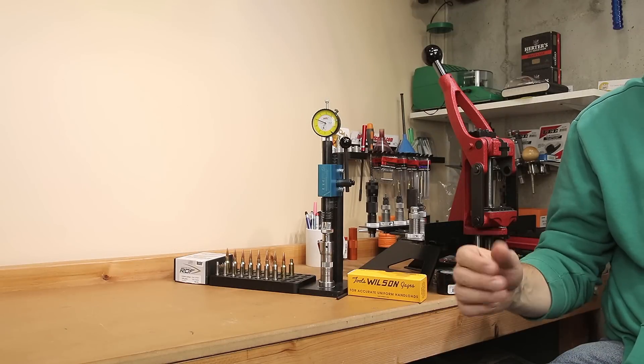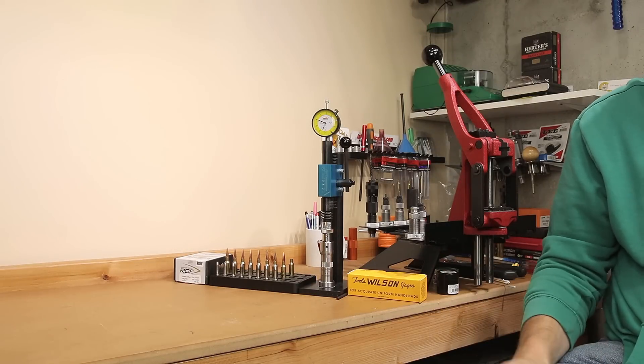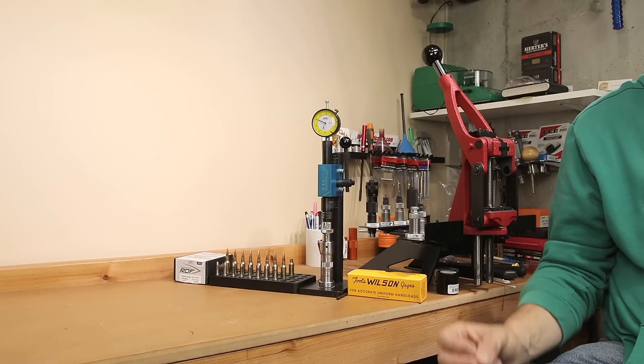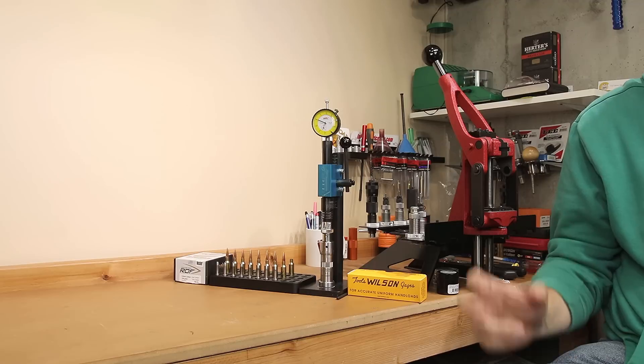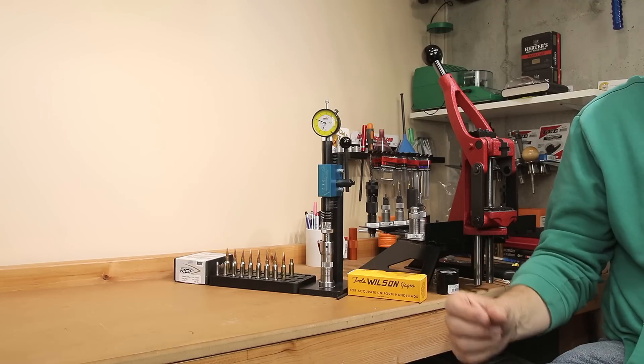The projectiles we're using are not my favorite either. They're 130 grain Nosler RDFs. For this particular test, to make sure we're getting a good seating distance, we're seating to the cartridge overall length of 2.750.